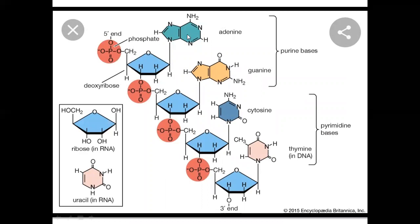The double-ring structure nitrogenous bases have a common name — they are called purine bases. Nitrogenous bases with double ring structures, like adenine and guanine, are called purine bases. The single-ring structure nitrogenous bases are called pyrimidine bases. So nitrogenous bases are of two types: purine bases which have double ring structures, and pyrimidine bases which have single ring structures.